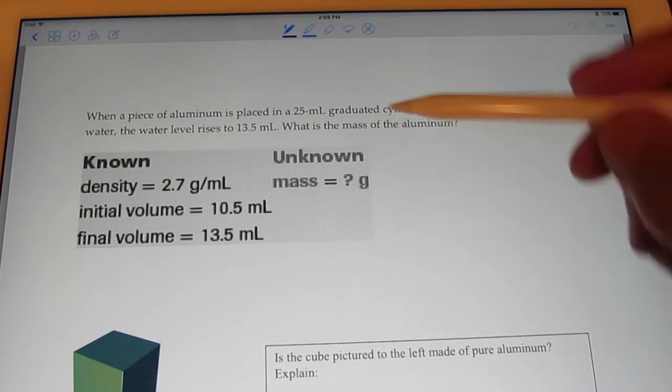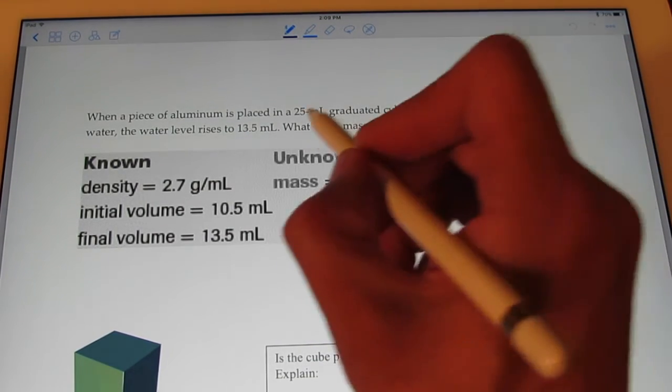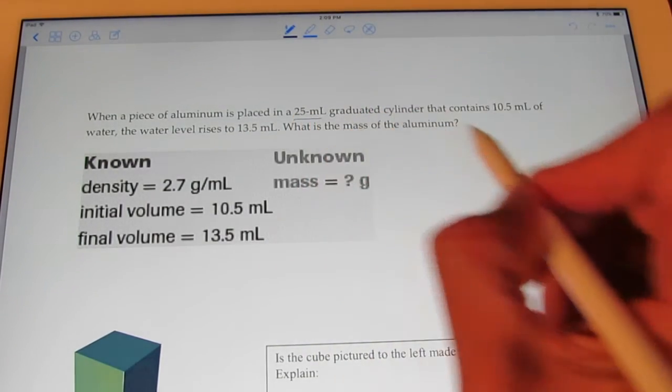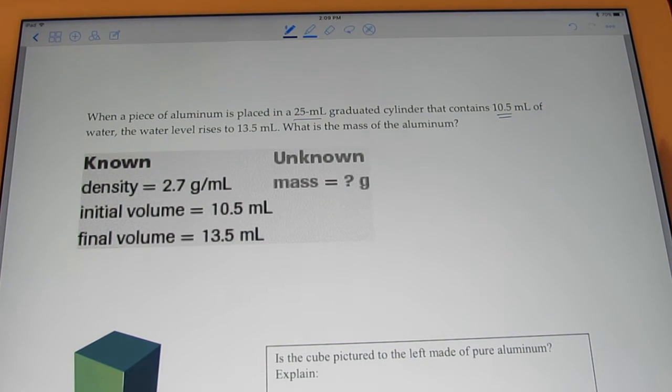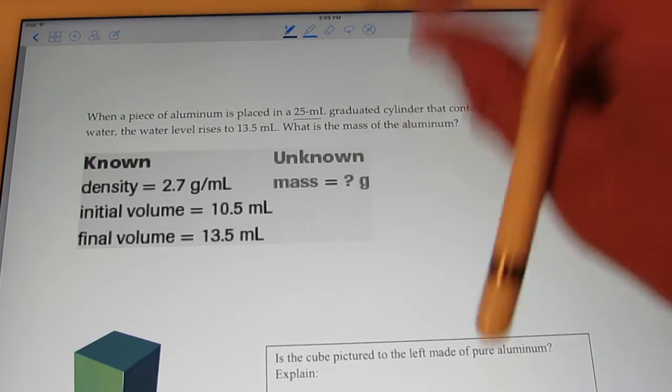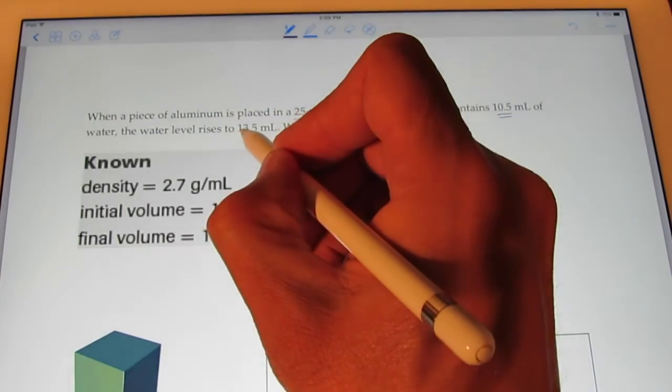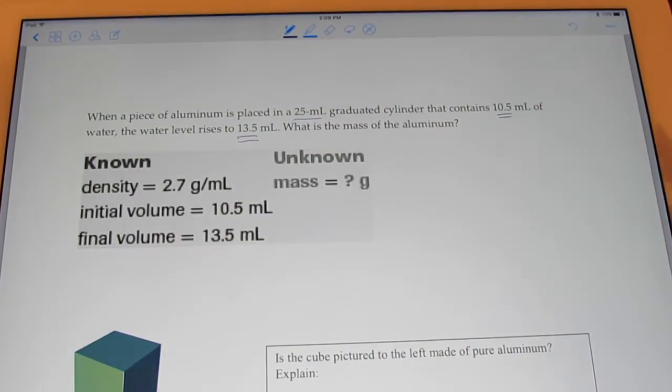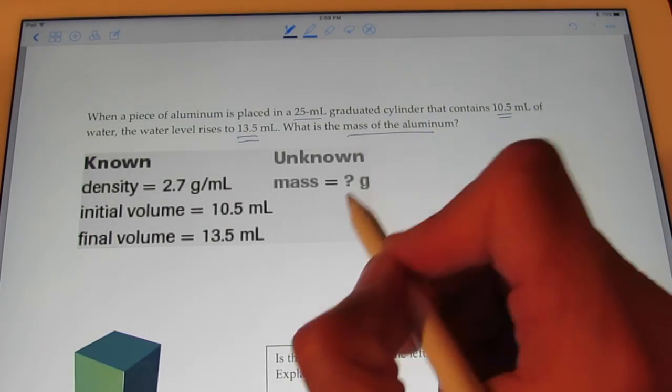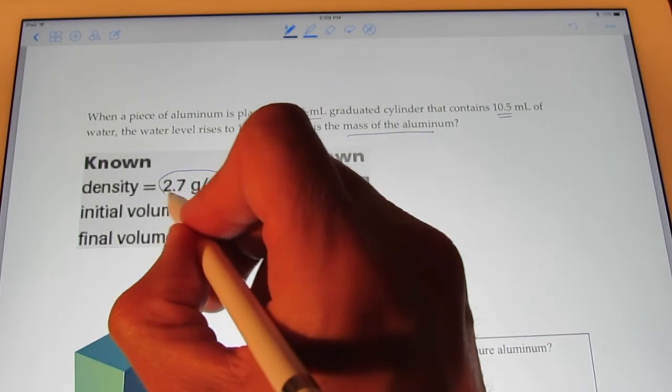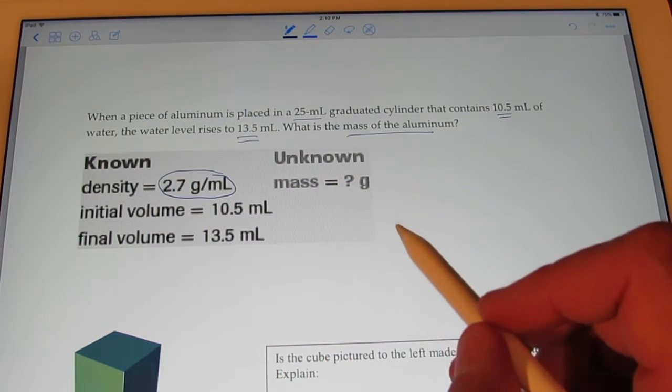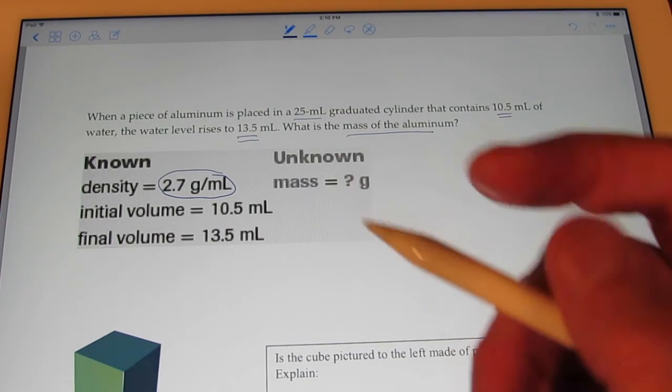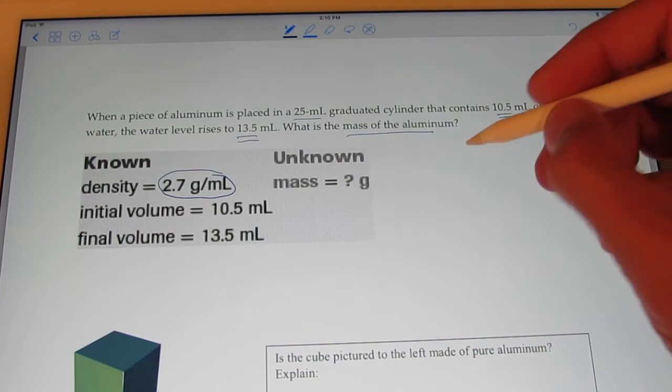Let's do this one. We have a piece of aluminum. Now, that piece of aluminum is placed in a 25 mil graduated cylinder and it contains 10.5 milliliters of water. And when I put the aluminum in there, kerplunk, the water level rises to 13.5 milliliters. What is the mass of the aluminum? Okay? Well, let's see. I'm giving you the density. So, the density of aluminum is known. We want to know how much it weighs in grams. What is its mass? So, let me draw a picture of what we did here.